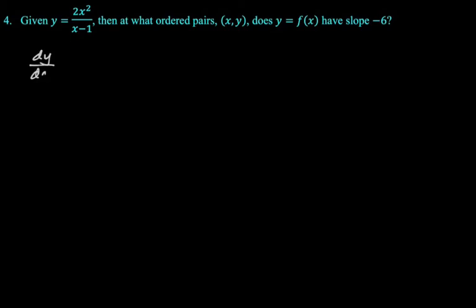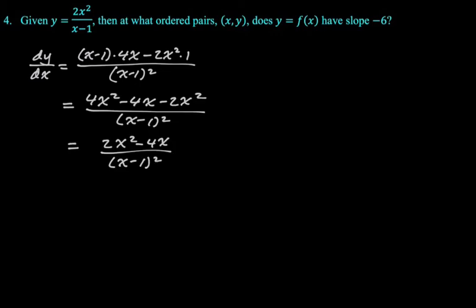So quotient rule, because it's a quotient. Bottom. Derivative of the top is 4x minus top, which is 2x squared. Derivative of the bottom is 1 over the bottom squared. I think it does make sense to kind of simplify this. So I'm going to expand, hopefully correctly. So 4x squared minus 4x minus 2x squared. 4x squared minus 2x squared is 2x squared. So 2x squared minus 4x over the quantity x minus 1 squared. I think that's good.